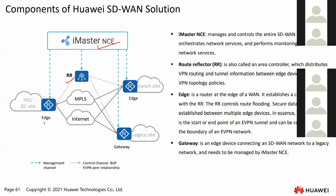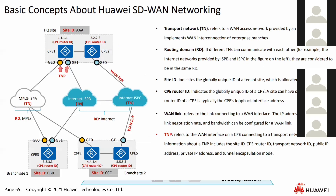Next are some basic concepts you need to know in the SD-WAN solution. The first is transport network, which refers to the WAN access network provided by an ISP. For example, we have MPLS provided by ISP A as one transport network, internet provided by another ISP as a second, and internet provided by ISP C as a third transport network.